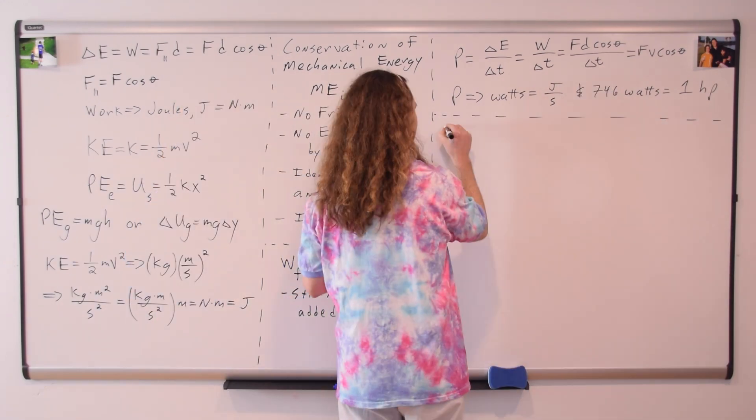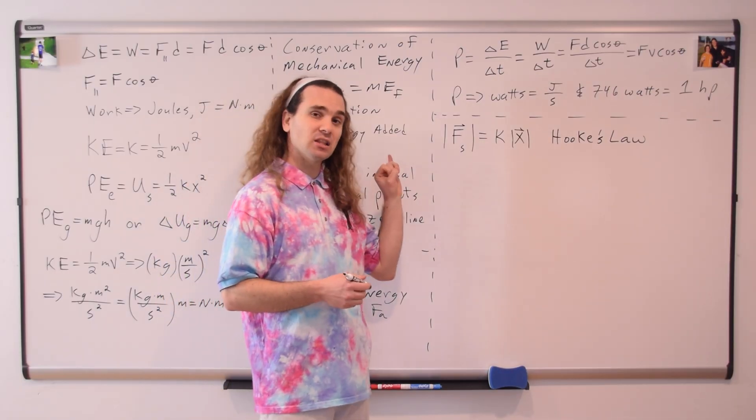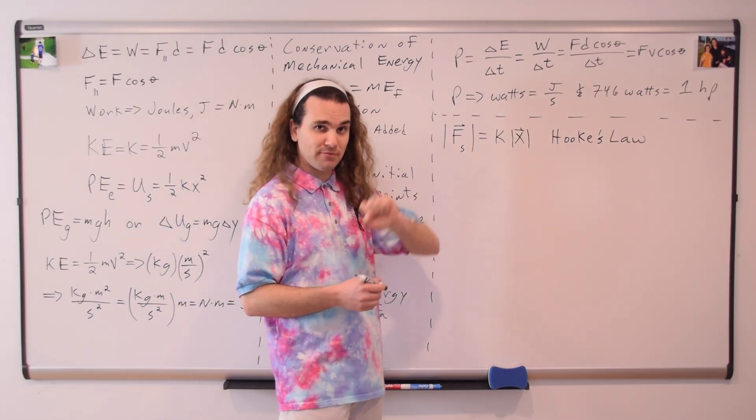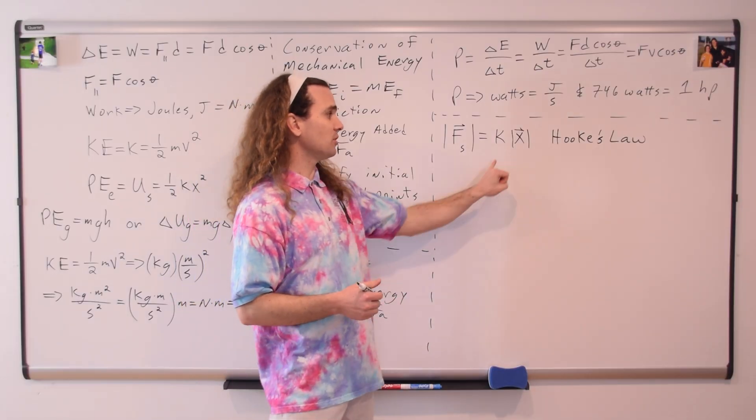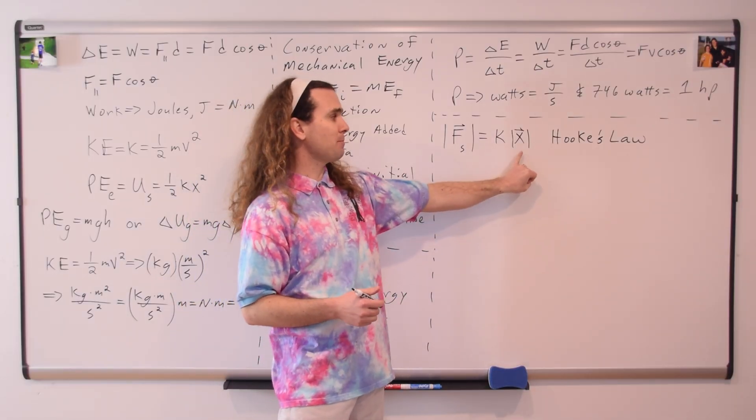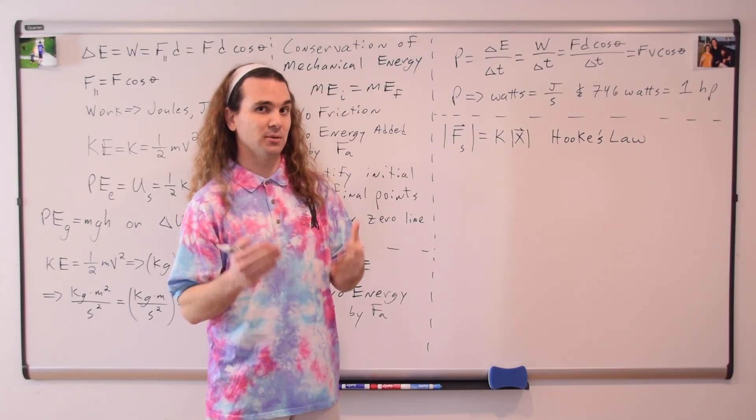Hooke's Law. The force of the spring is linearly proportional to the displacement from equilibrium position. In other words, the force of the spring is equal to the spring constant, multiplied by that displacement from equilibrium, or what is also called rest position.